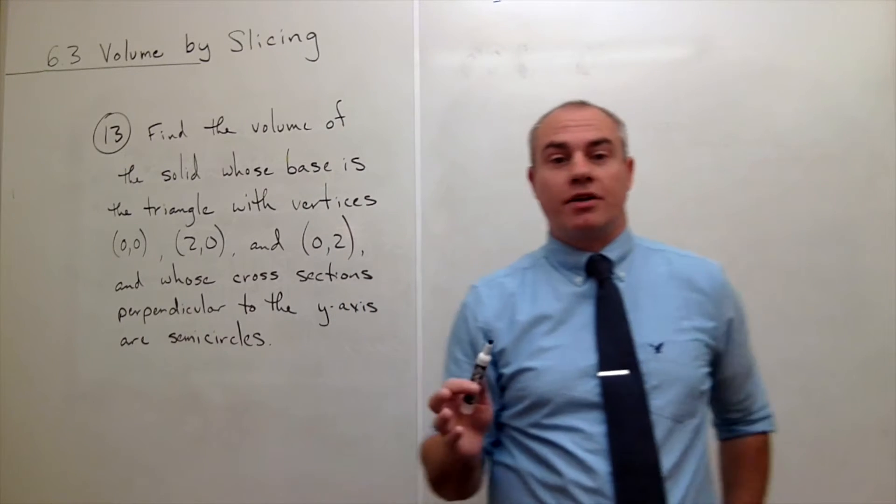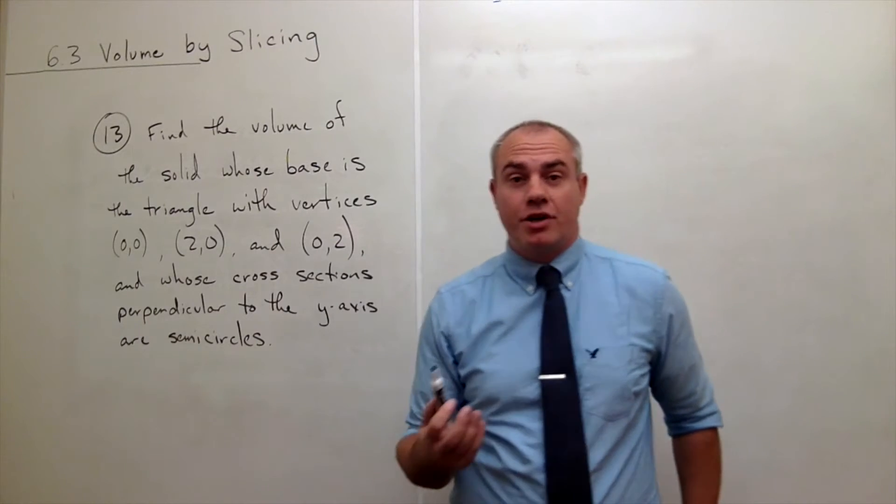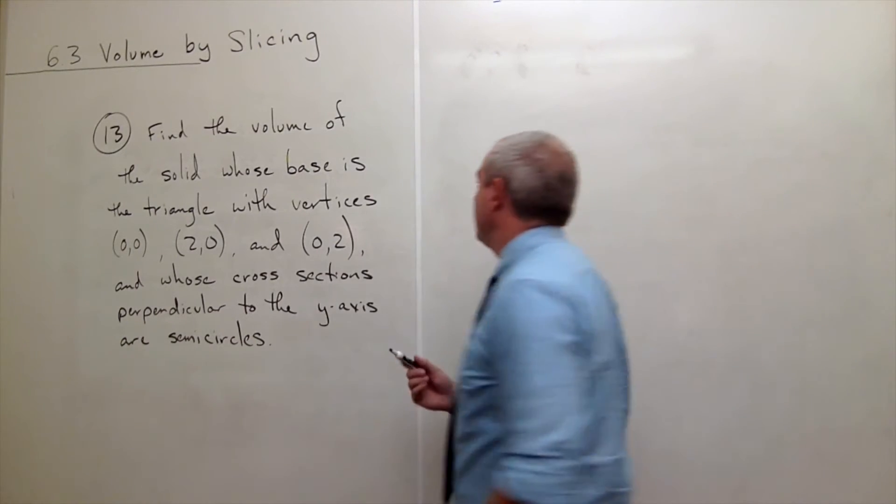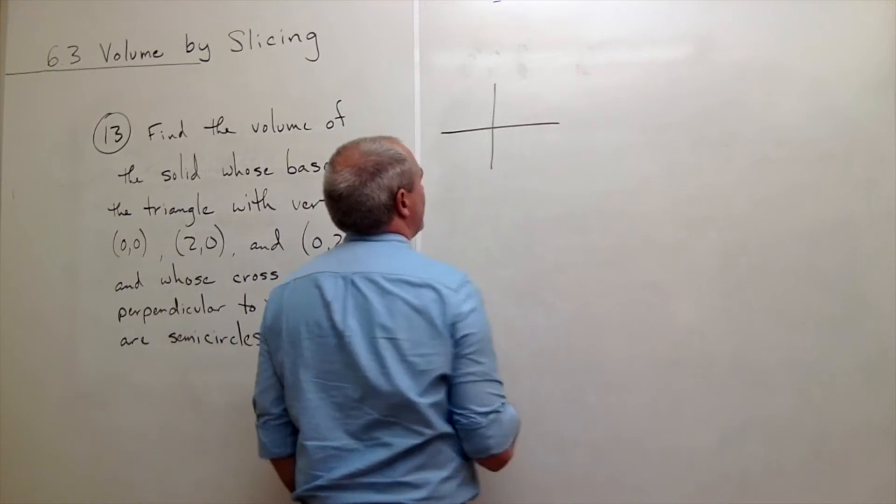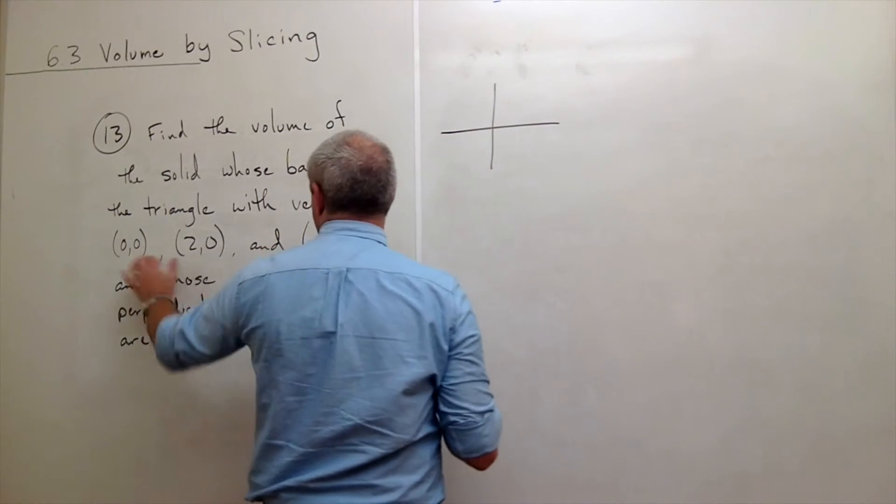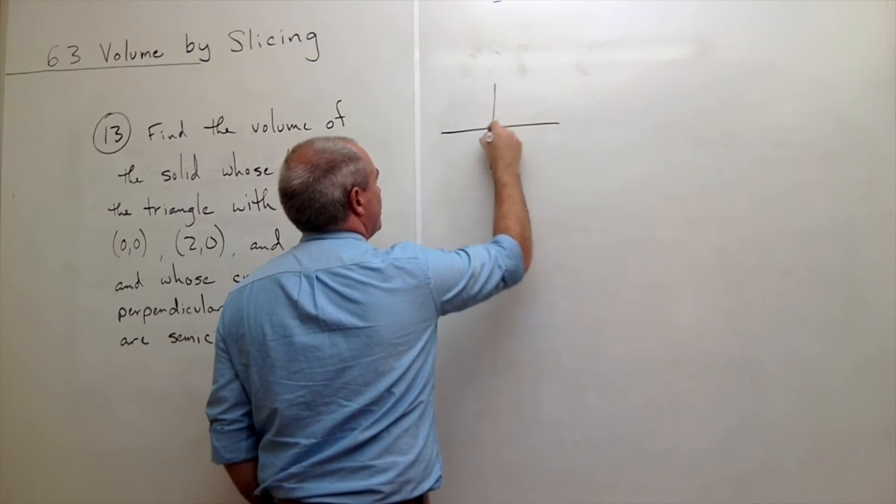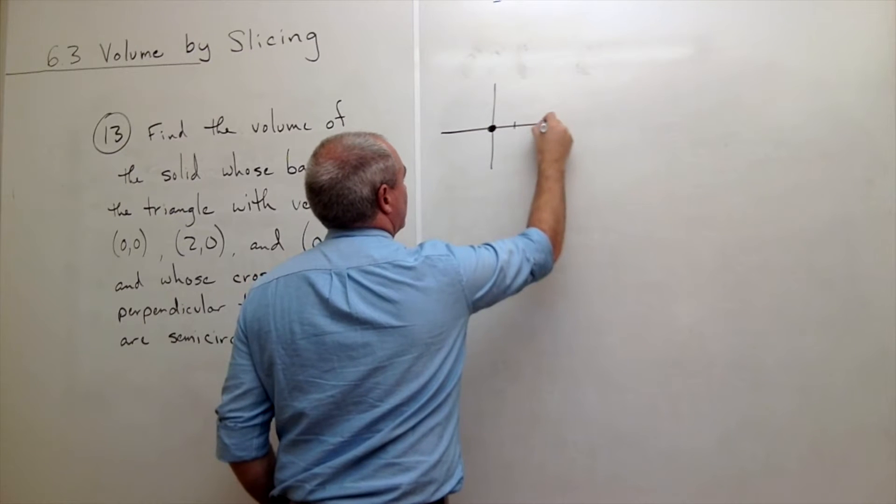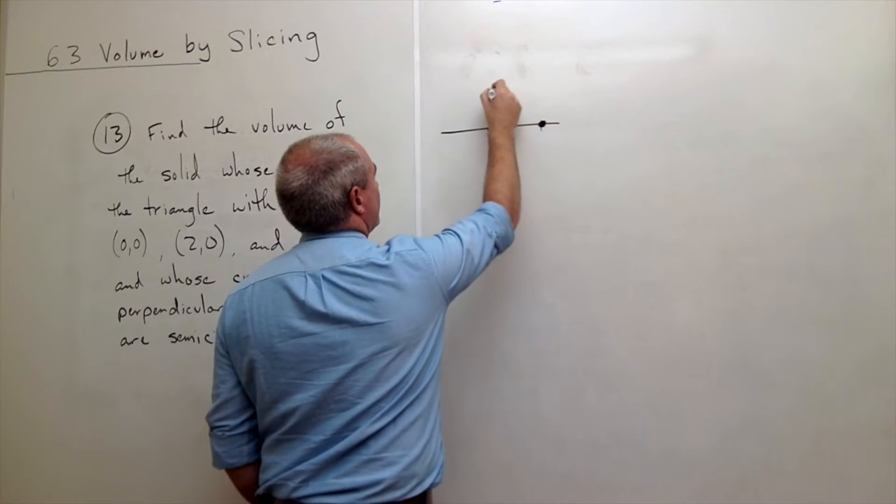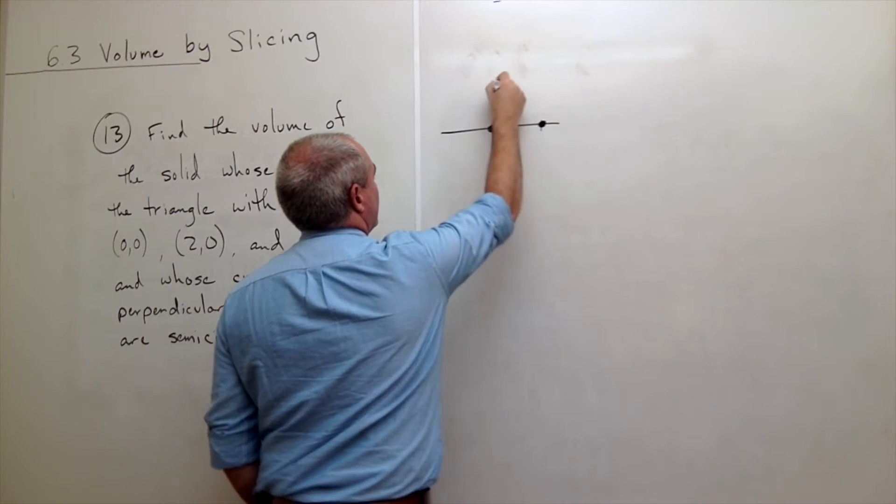Okay so before we start the problem let's just draw a little picture, see what's going on. So here's my x and y axis. We've got three points: we've got (0,0) which is the origin, we've got (2,0) right out here, and we've got (0,2) which is up here.